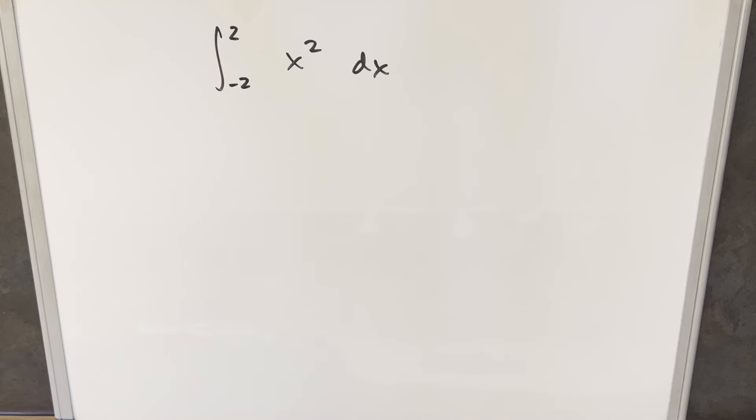Okay, we have something kind of strange today. We've got the integral from minus 2 to 2 of x squared dx. And you may think this is just way too easy and simple. The only interesting thing here is I did this two different ways and got two different answers. And so what I want to do is kind of look into that problem.